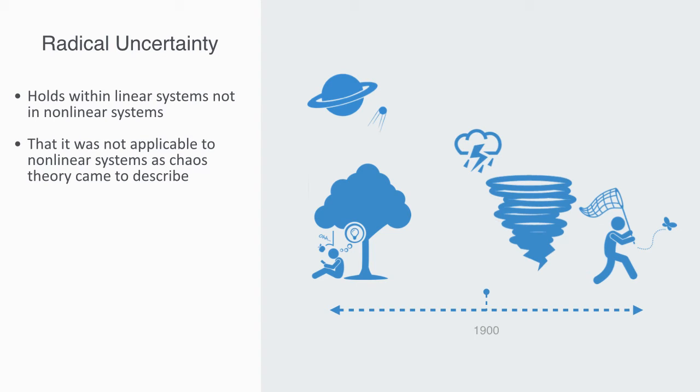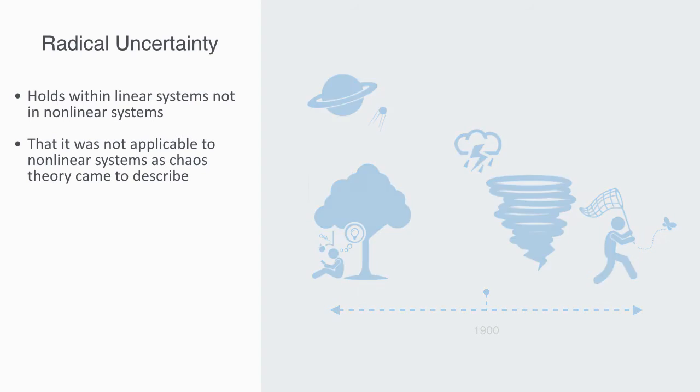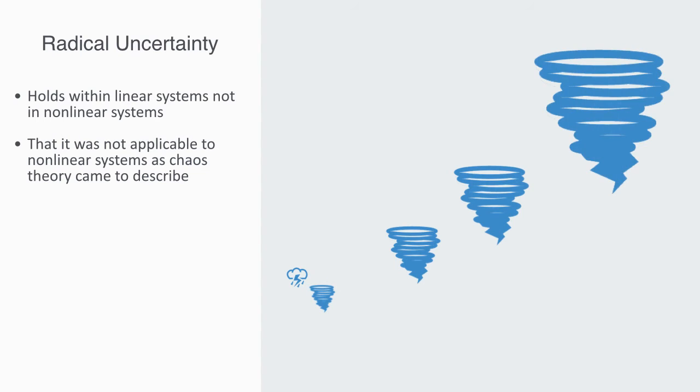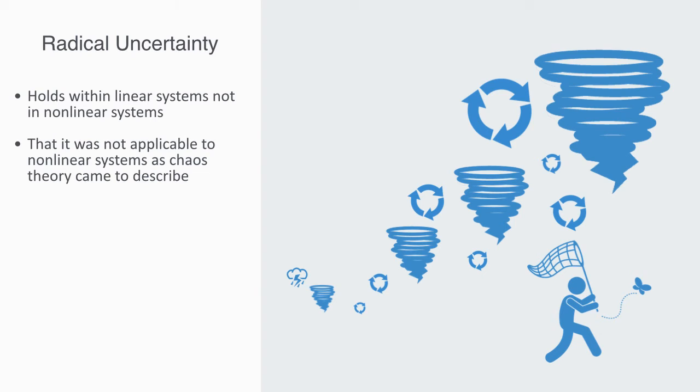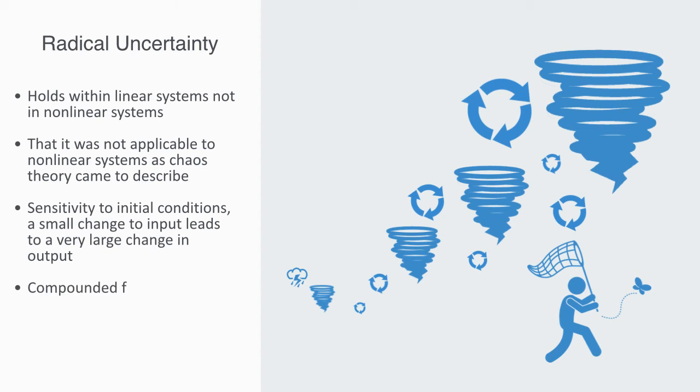Chaos theory, on a very high level, showed us that the dynamics to a non-linear system, emerge out of the non-linear interactions between the parts, during the system's process of development. This is part of what we mean by the term sensitivity to initial conditions. An indiscernible small change to the input value to the system, can lead to a very large change in the output variables at a later stage. Due to these compounded feedback loops, allowing for small changes to grow exponentially. And this gives us the so called butterfly effect.